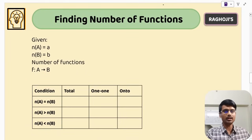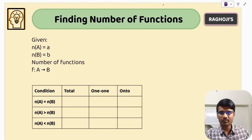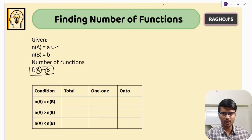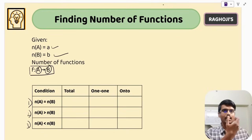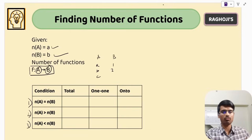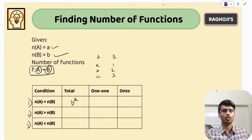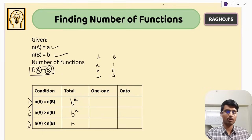Now the most interesting part: the shortcut method. For a function from A to B, where A has 'a' elements and B has 'b' elements, there are three cases. Case 1: |A| = |B|. Case 2: |A| > |B|. Case 3: |A| < |B|. The formula for total number of functions is B^A in every case. However, the number of one-one and onto functions will change depending on the case.